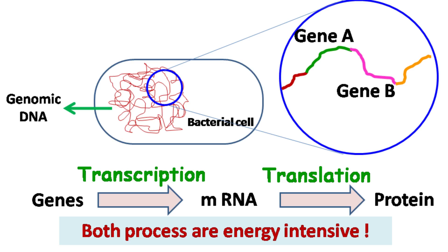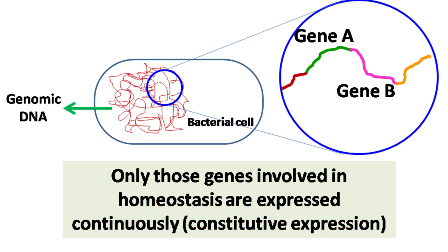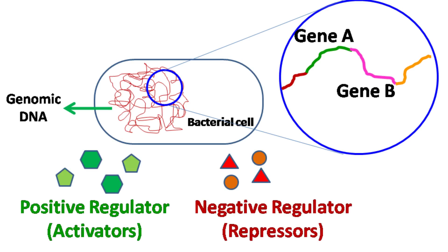Both transcription and translation are highly energy intensive, hence only those genes that are required for homeostasis are continuously expressed. This type of expression is known as constitutive expression. Most genes are controlled by extracellular signals, usually molecules in the growth medium. Signals that positively regulate gene expression are called activators, while those that negatively regulate gene expression are called repressors. Both activators and repressors are DNA-binding proteins that regulate gene expression.